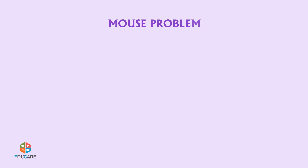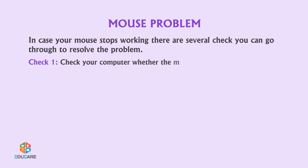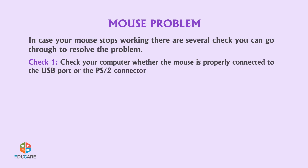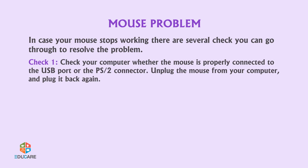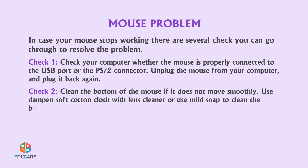Mouse Problem. In case your mouse stops working, there are several checks you can go through to resolve the problem. Check 1: Check your computer to see whether the mouse is properly connected to the USB port or the PS/2 connector. Unplug the mouse from your computer and plug it back again. Check 2: Clean the bottom of the mouse if it does not move smoothly. Use a dampened soft cotton cloth with lens cleaner or mild soap to clean the bottom surface.